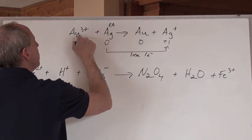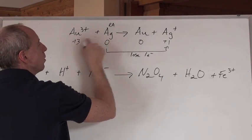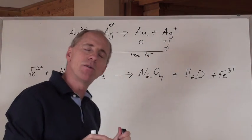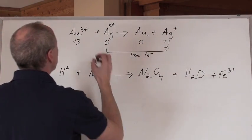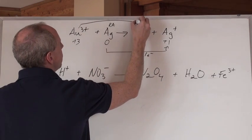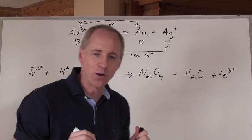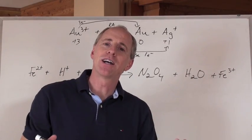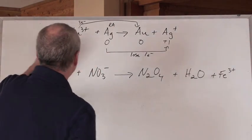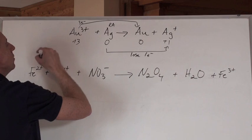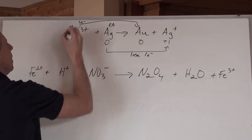And that means then that the gold, which is going from plus 3 to 0, is gaining 3 electrons. And a gain of 3 electrons here means that it's undergoing reduction. And reduction means that the gold ion is the oxidizing agent.